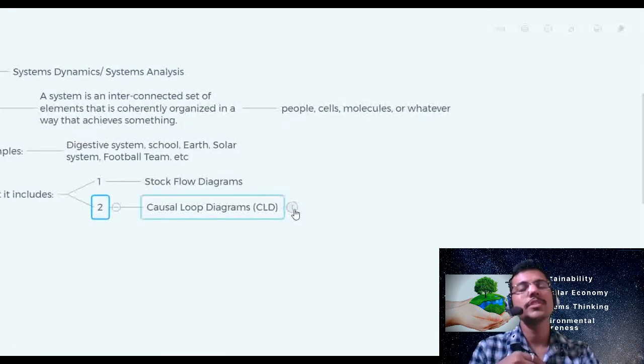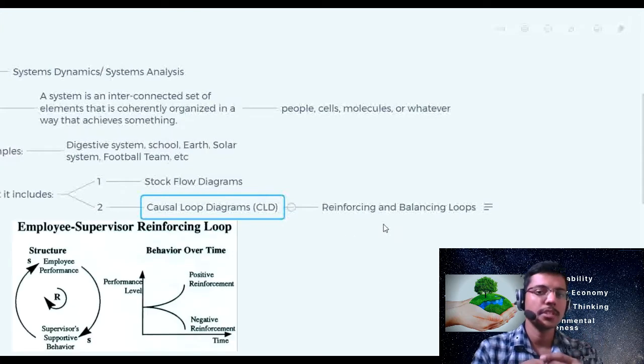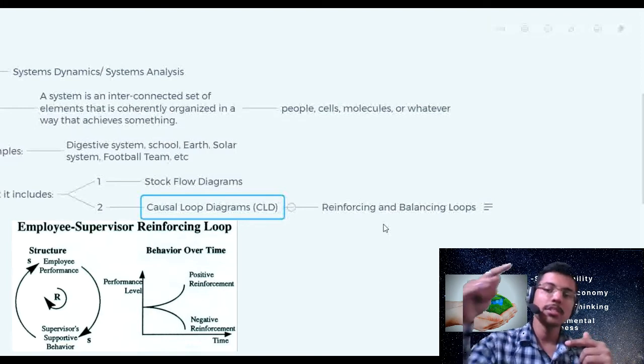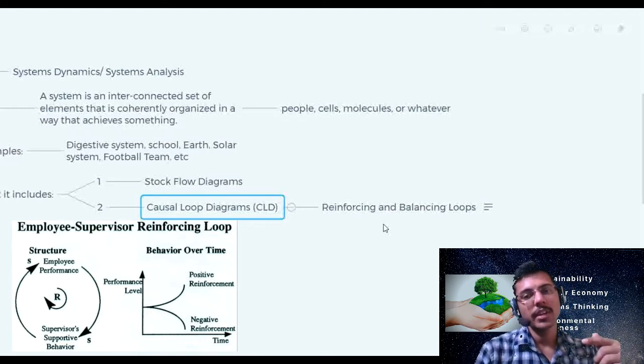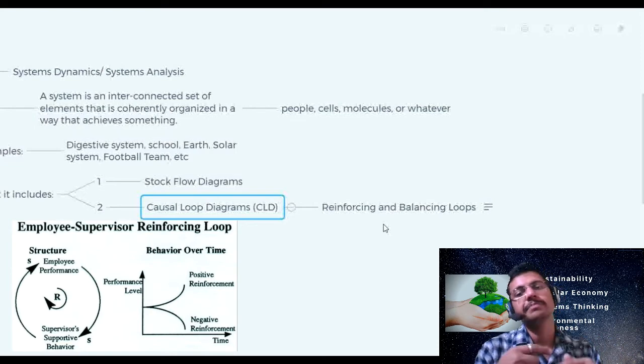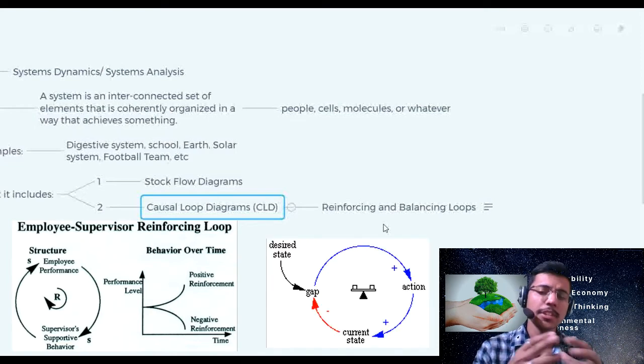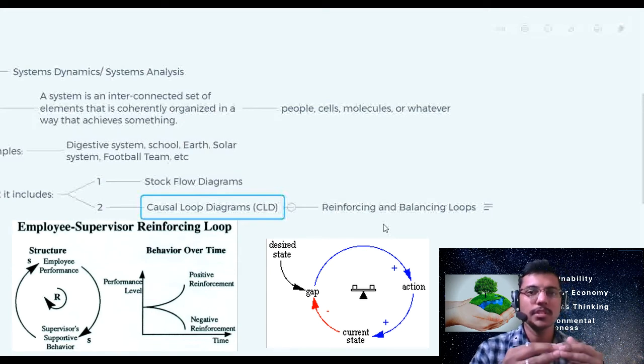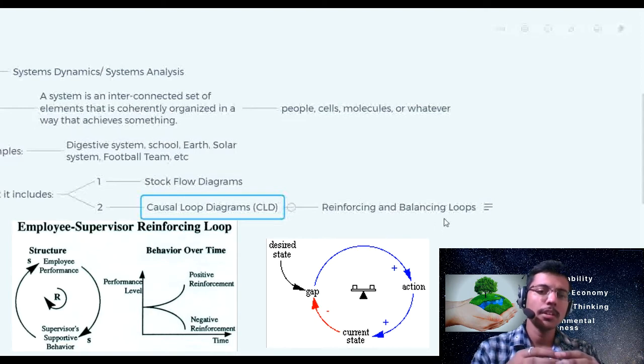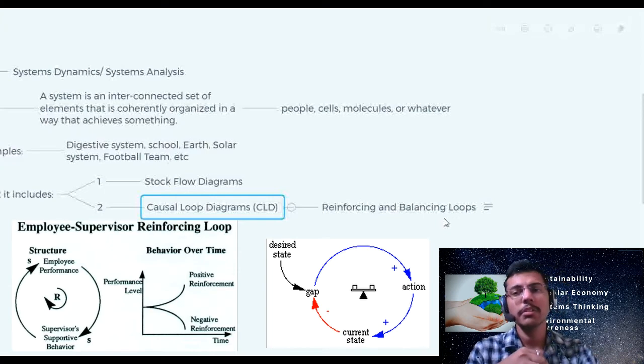There are two types of loop. First is the reinforcing loop and second is a balancing loop. In a reinforcing loop, the stock or the system is continuously increasing or continuously decreasing. That reinforces the pattern and second is balancing. In this balancing loop the system tries to be at a stable state. We will in coming videos look into detail about this stock flow diagram, these loops with examples. So that will be very clear in future videos.